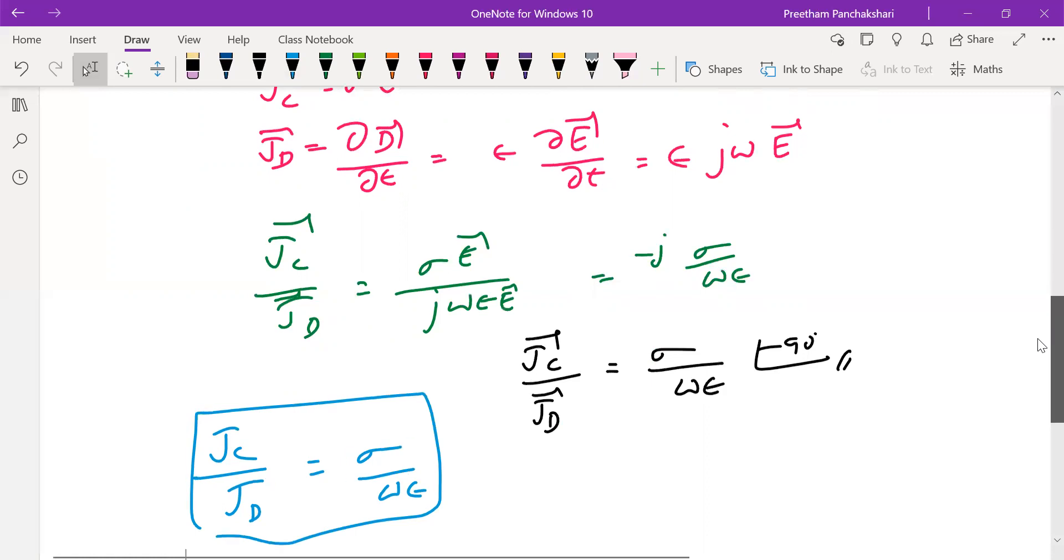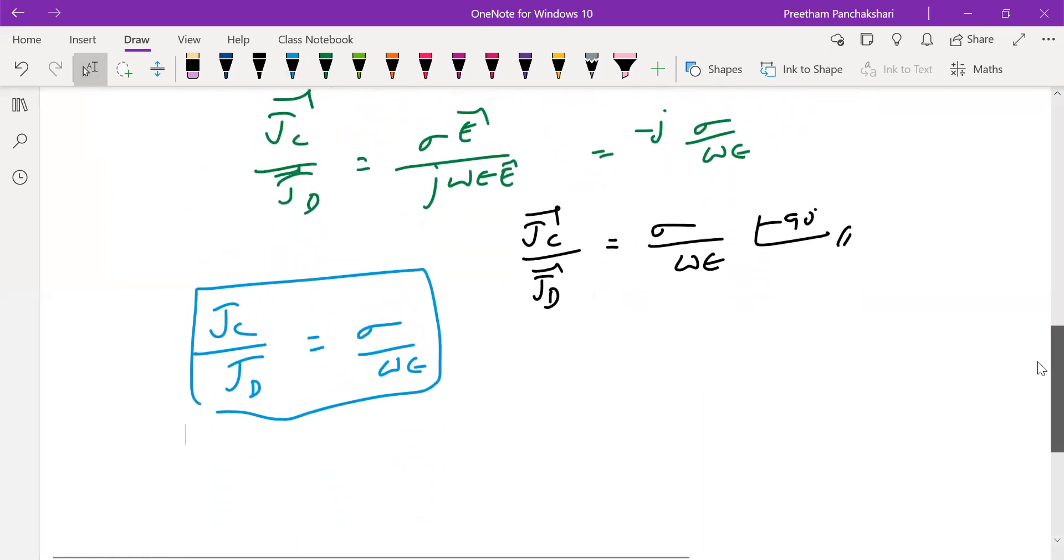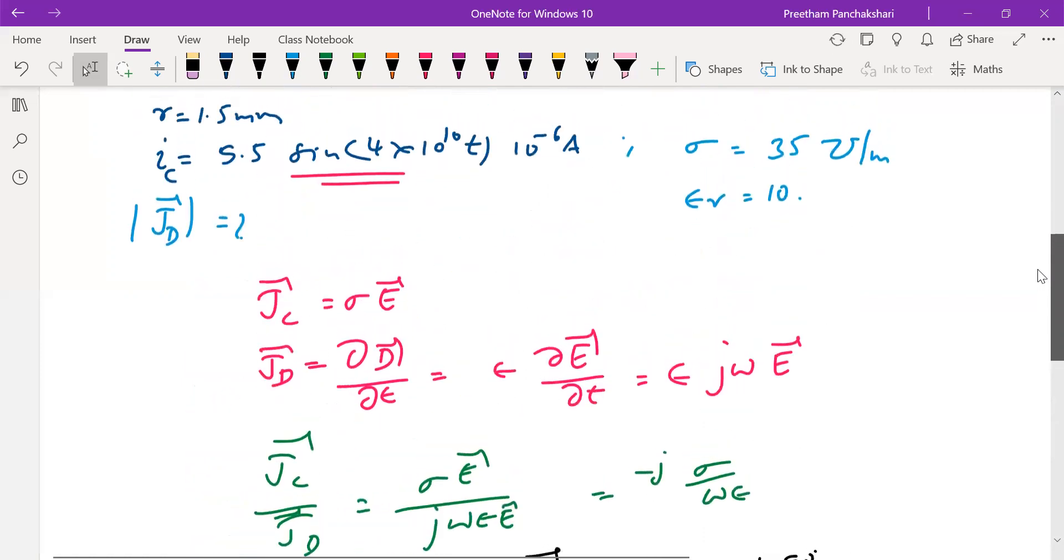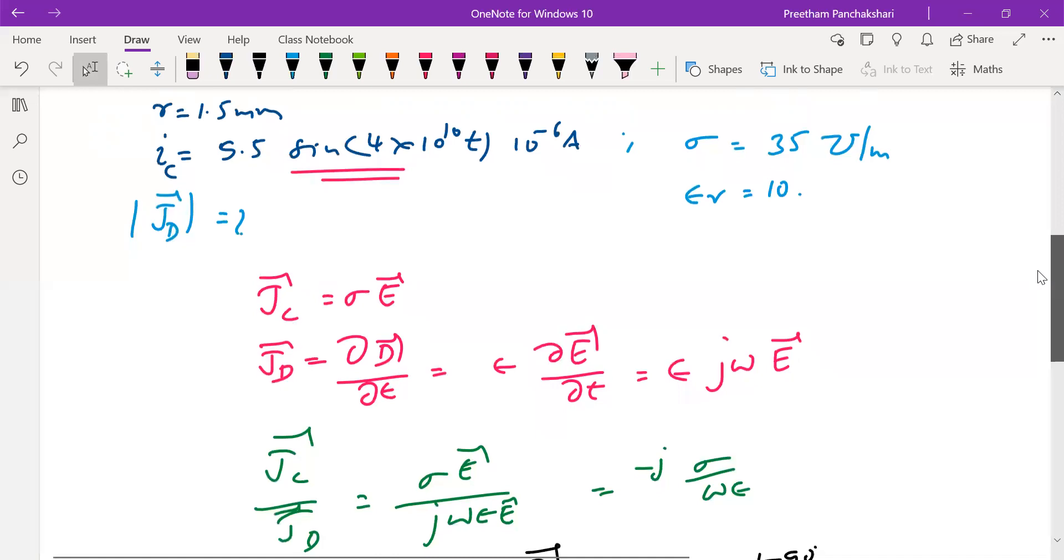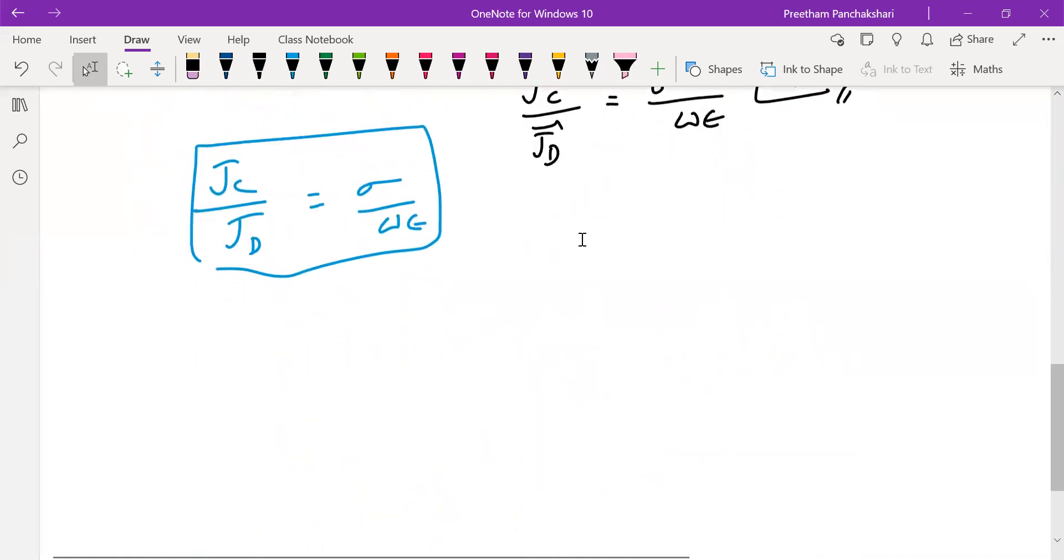Now let us find Jd from Jc. Jd required, but Jc not given, but Ic given. You can find from it. So what I suggest is that first find Jc. Jc is conduction current density, so current by area.